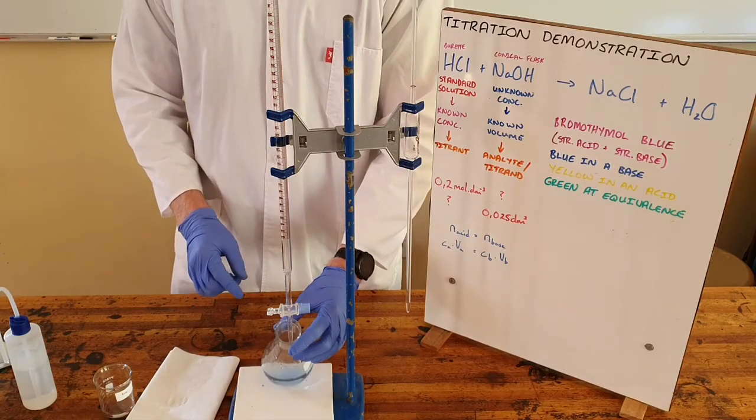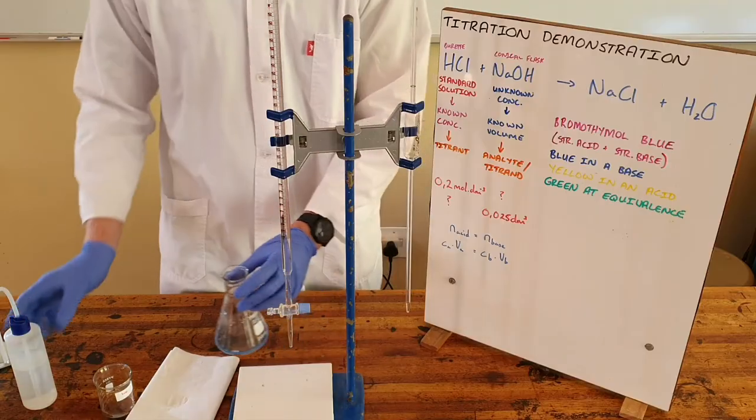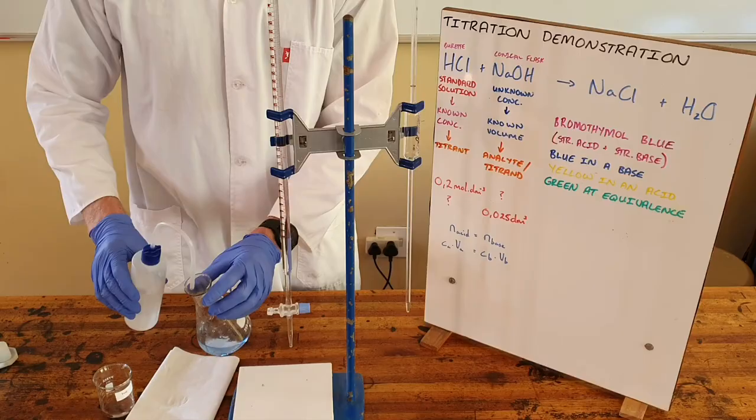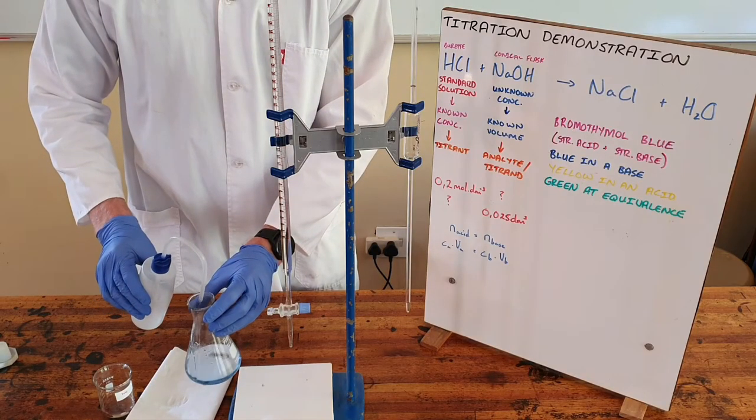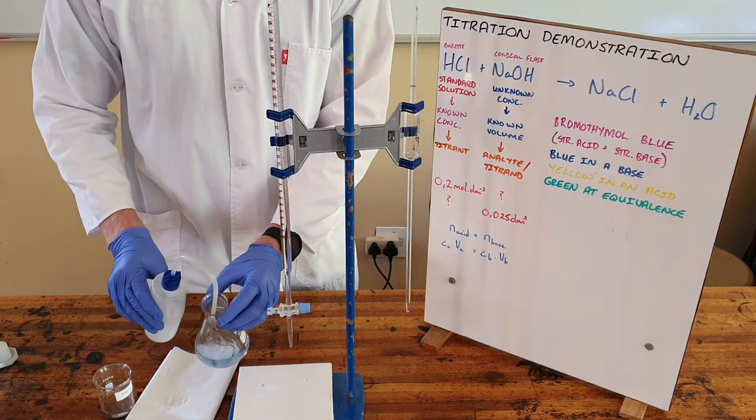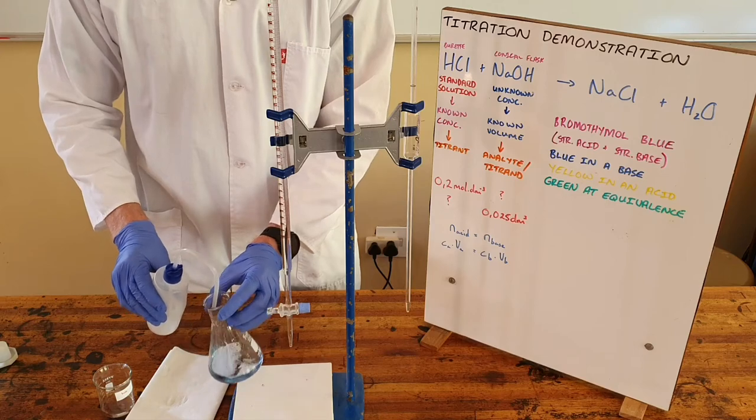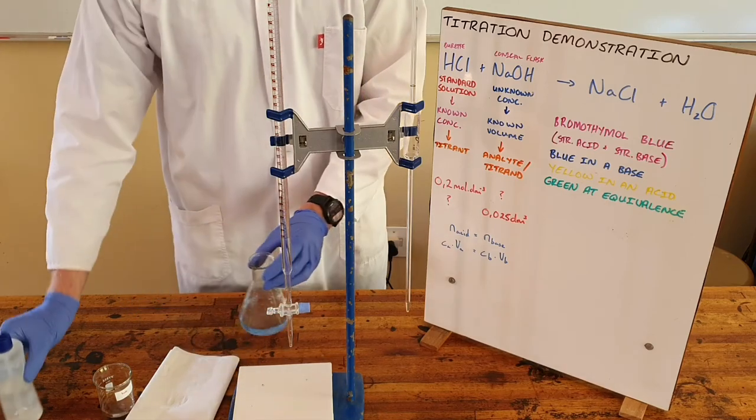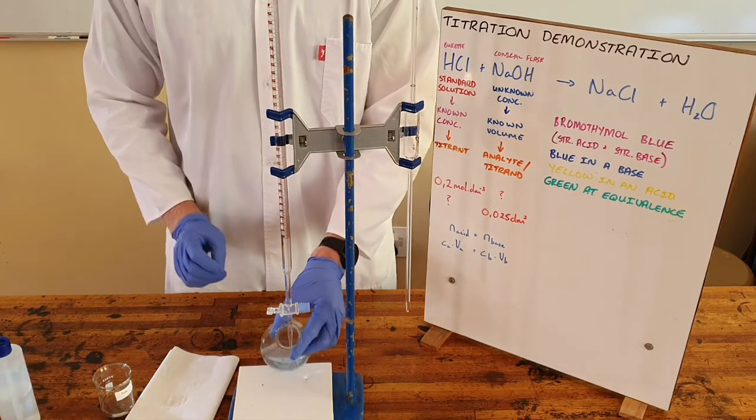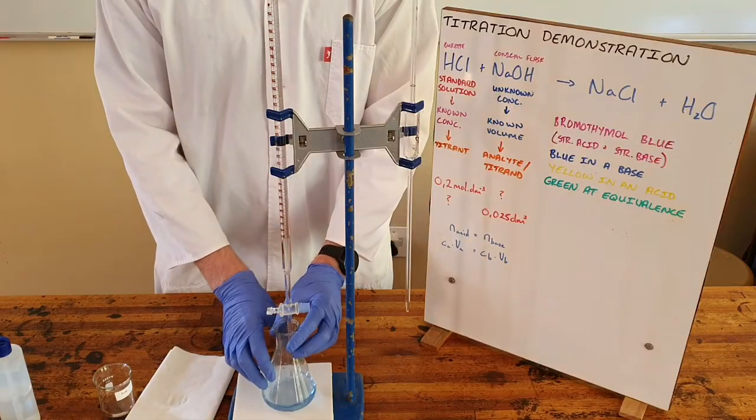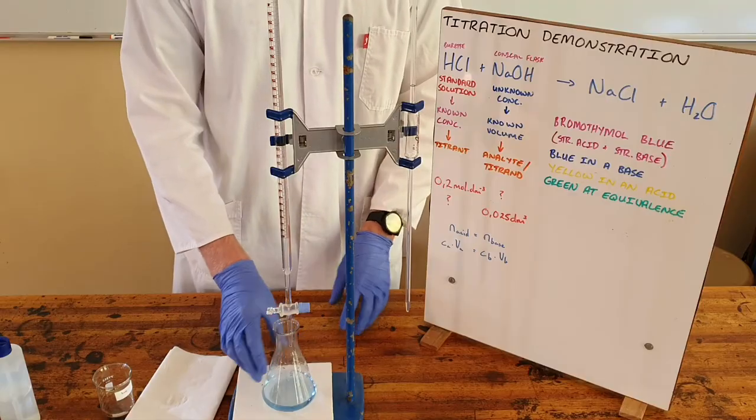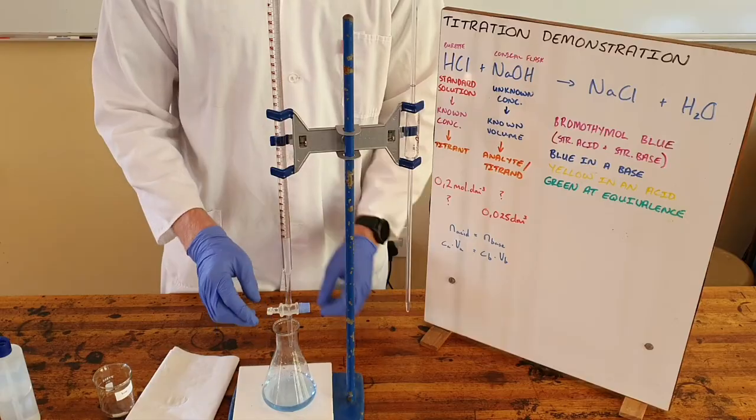What is also necessary is to ensure that there is no acid or base trapped on the side of this conical flask. So I would flush it out with water. Once again this is allowed because the water is not changing the amount of acid or base that is present it is only making sure that it is at the bottom of this conical flask.